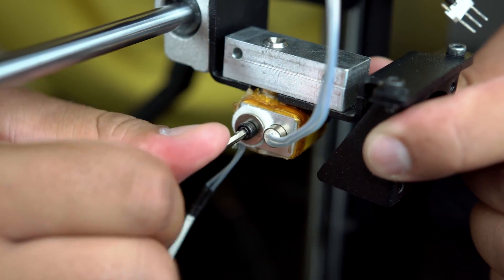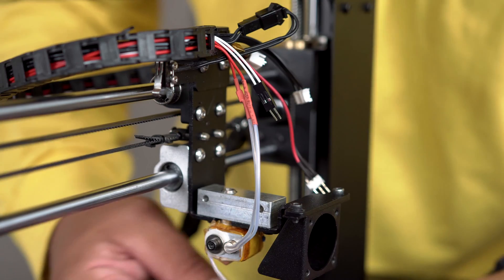The felt washer will protect the cables from being crushed while tightening it. Just try not to go too tight.